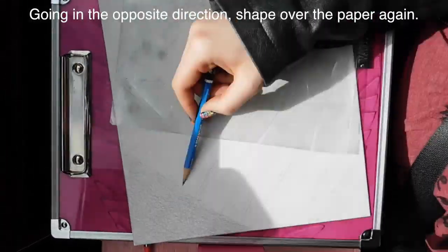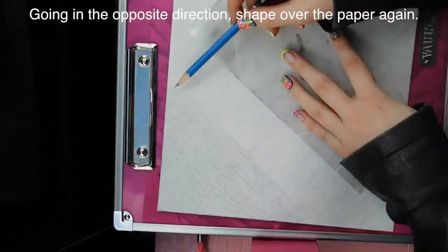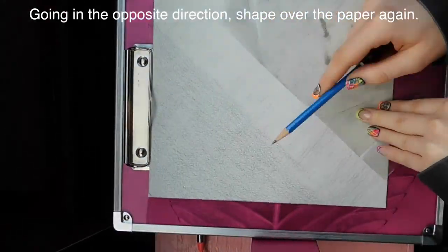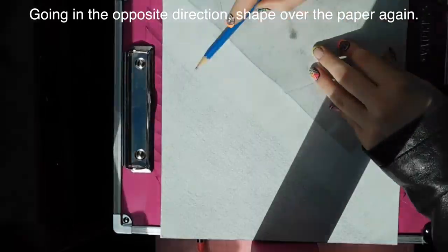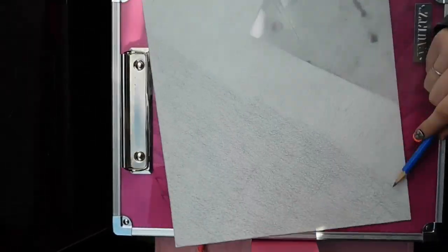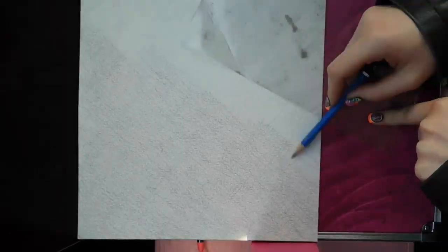After I go over in one direction, I'm just going to switch it up and go over it the same way with the same pencil in the other direction. This is going to prevent any of those little lines from showing through because there's so many of them that they kind of just disappear.